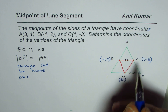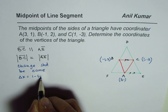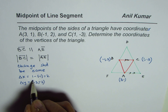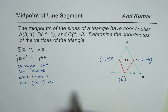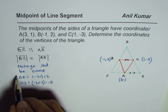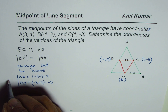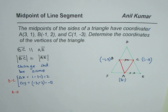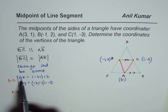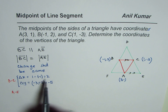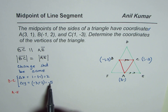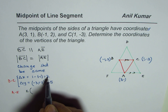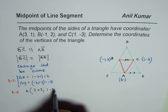The change in X value, delta X, equals 1 minus (-1), which is 2. And the change in Y value is -3 minus 2, which is -5. So that is the change from B to C. Therefore, we should have the same change when moving from A to E — the X value should increase by 2, and the Y value should decrease by 5. Since A is (3,1), the coordinates of E are (3+2, 1-5).